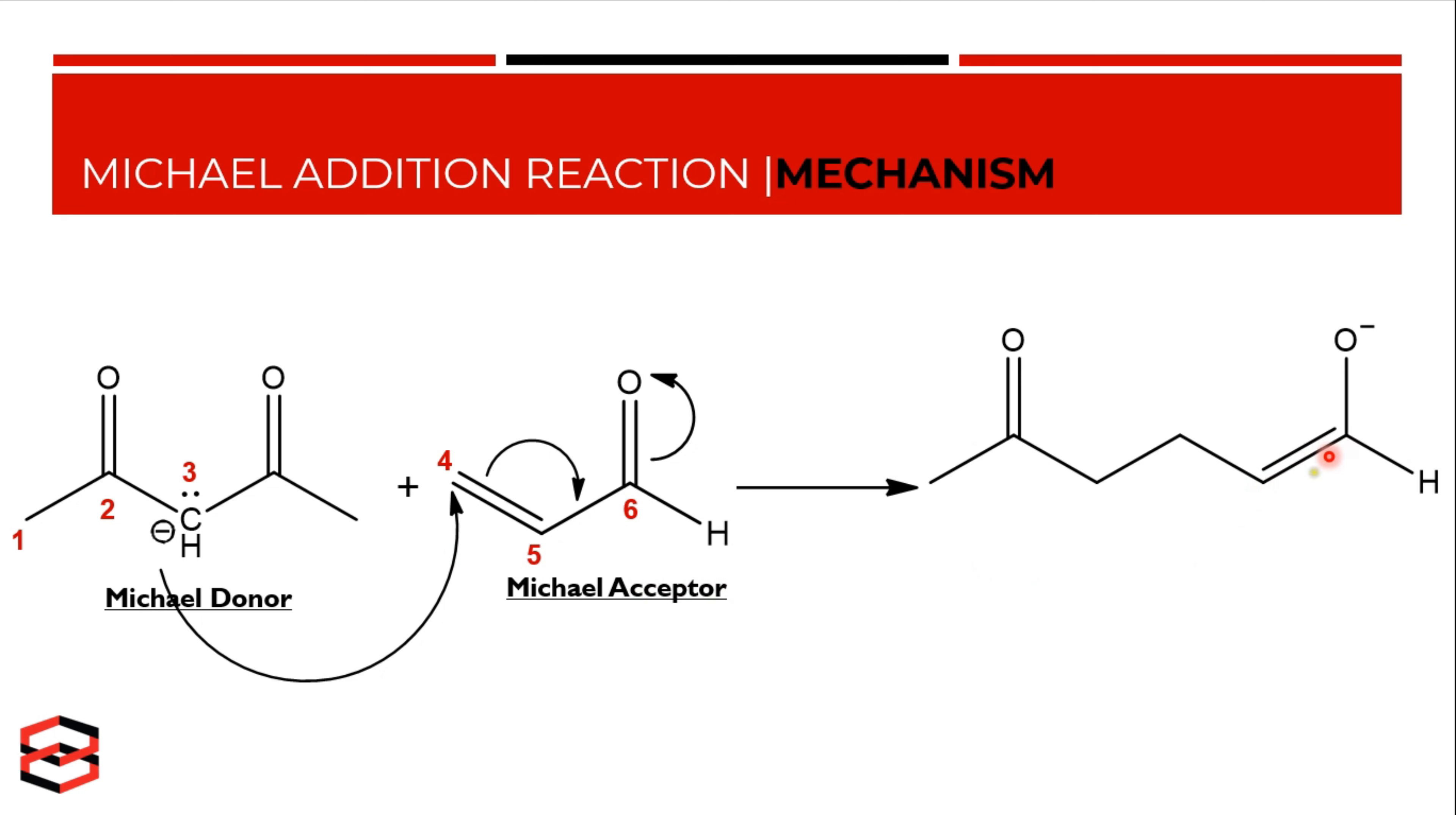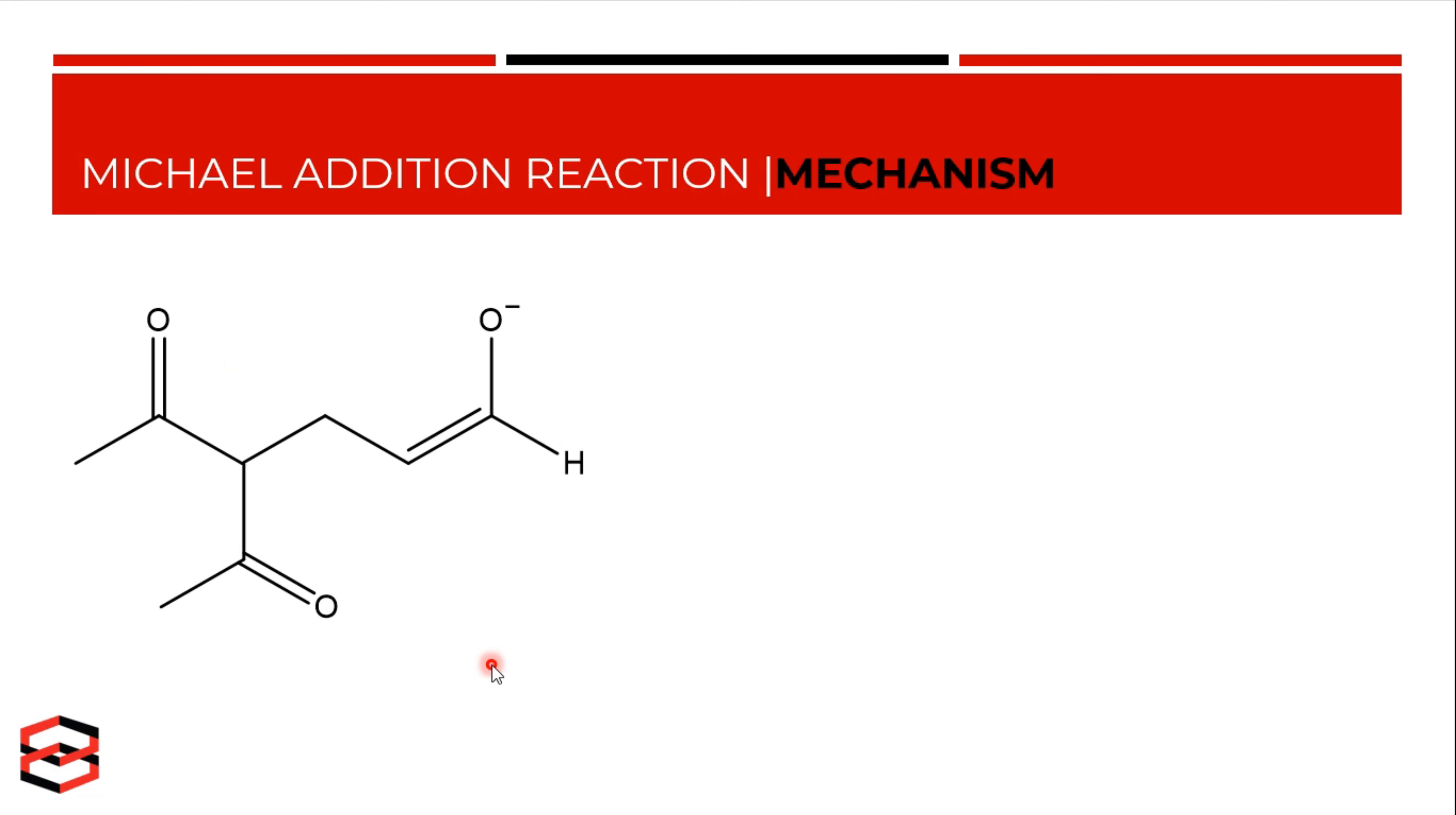Carbon five and six—between carbon five and six there is a double bond. And now on carbon three, we have two carbonyl groups. So let's put these carbons here. So this is what we now have.